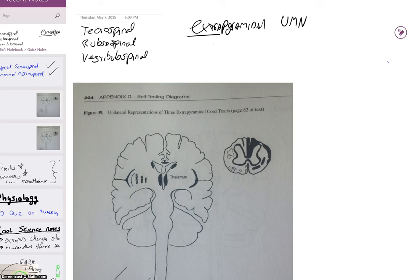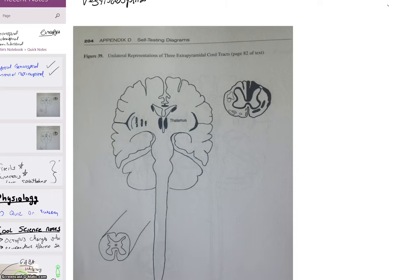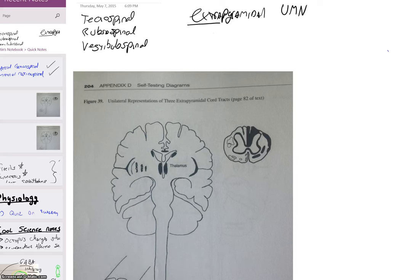That's how you can remember the difference between extrapyramidal and pyramidal fibers. So these three, the tecto, the rubro, and the vestibulo, they all start here in the brain. We're going to deal with the tecto first. The tecto is the one with that awesome video of the girl getting hit in the face by a watermelon. We all remember that one.